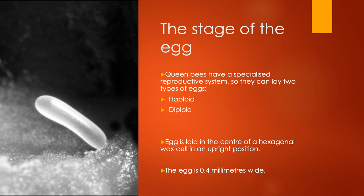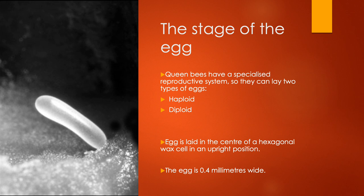Queen bees have a specialised reproductive system, so they can lay two different types of egg. These two different types decide whether the bee will be male — a drone bee — or a female — a worker or a queen bee. The haploid eggs they lay, which means one chromosome, will produce a drone bee, a male bee. The sperm collected by the queen bee when she mates is not released, so she releases an egg that is unfertilised. A diploid egg has two sets of chromosomes, so this egg is fertilised by the drone bees, and that will produce a female bee — either a queen bee or a worker bee.